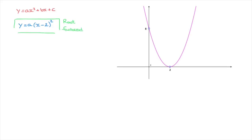The advantage of doing this is that rather than having to find all three coefficients a, b, and c, all we have to do now is find the value of the coefficient a. To do that, we need the coordinates of one other point through which this curve passes. The only other point we're given is the y-intercept, and since the x-coordinate of any y-intercept is always 0, that point has coordinates (0, 8).